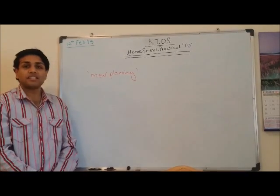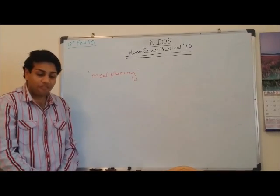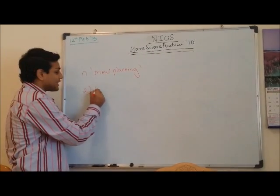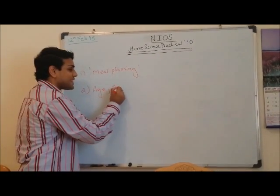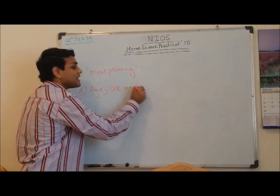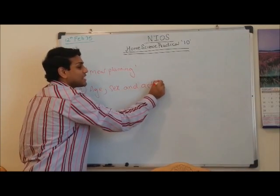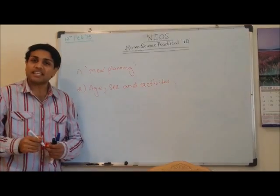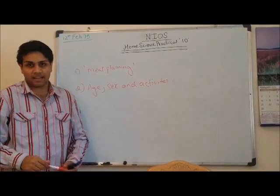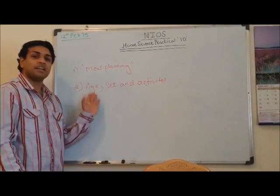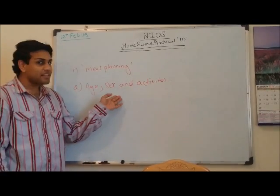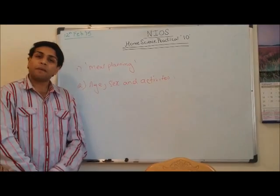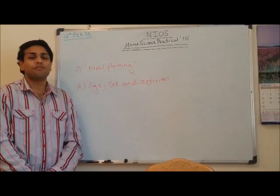Question number 2: list the various factors that affect meal planning. The factors are age, sex, and physical activities. These are the three factors that affect meal planning, because everyone has a different age, obviously sex, and different types of activities to perform. Depending upon that, the food will be given.